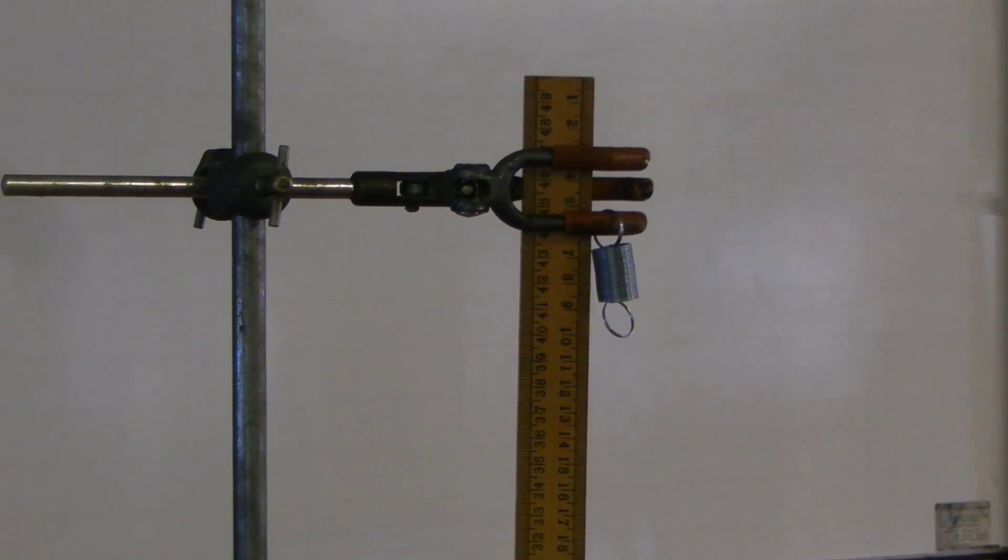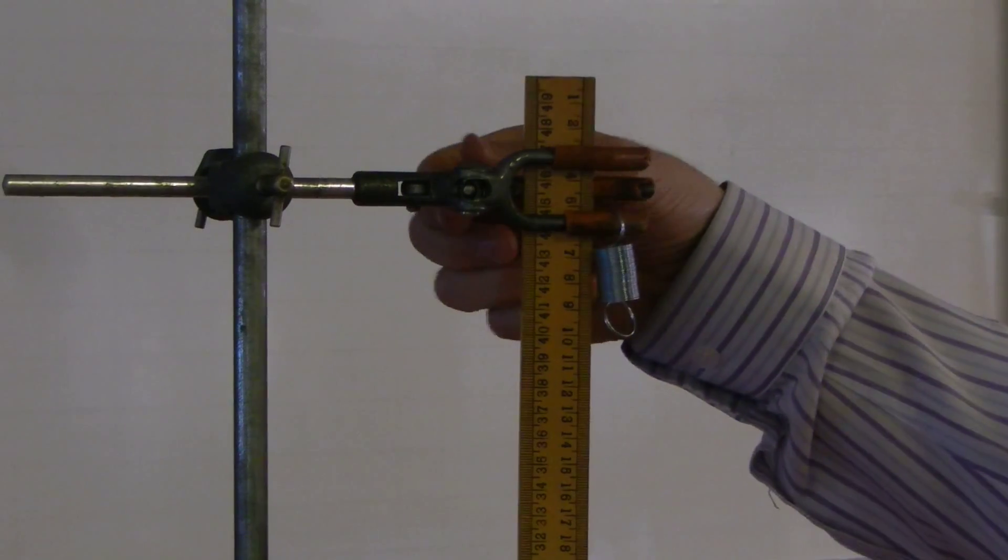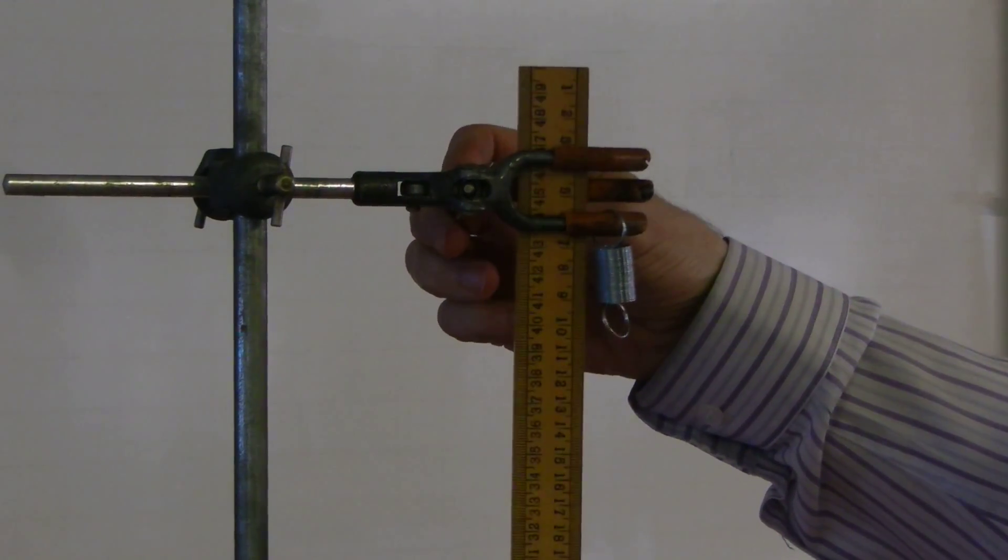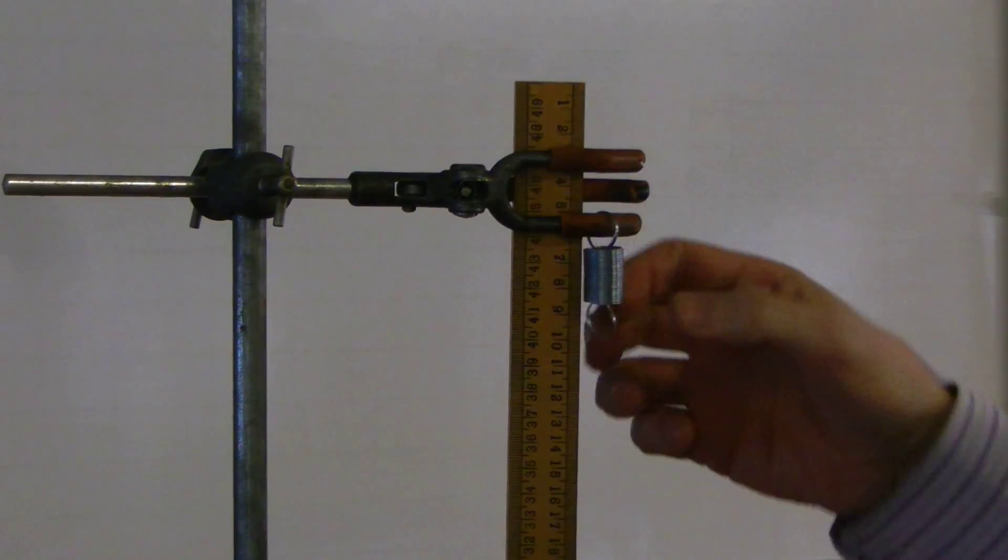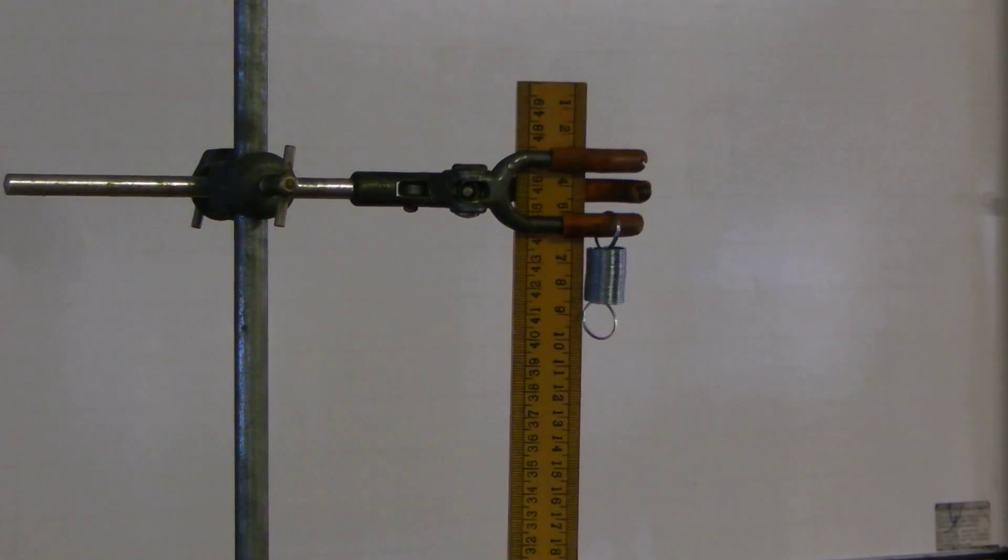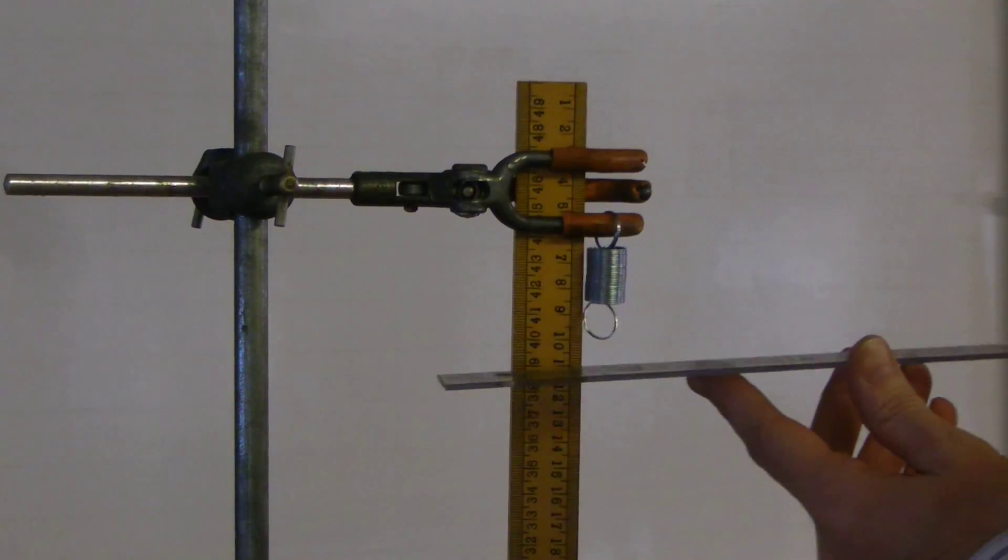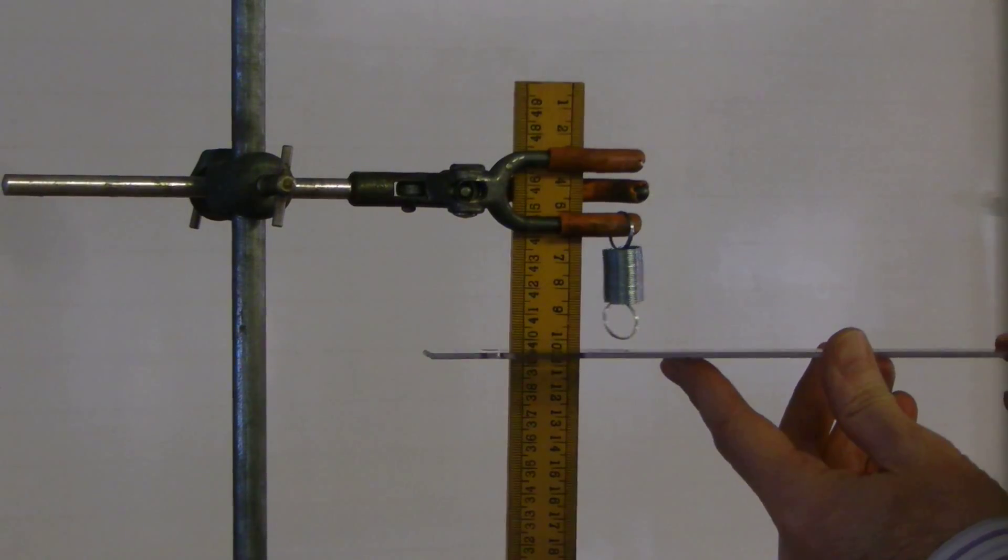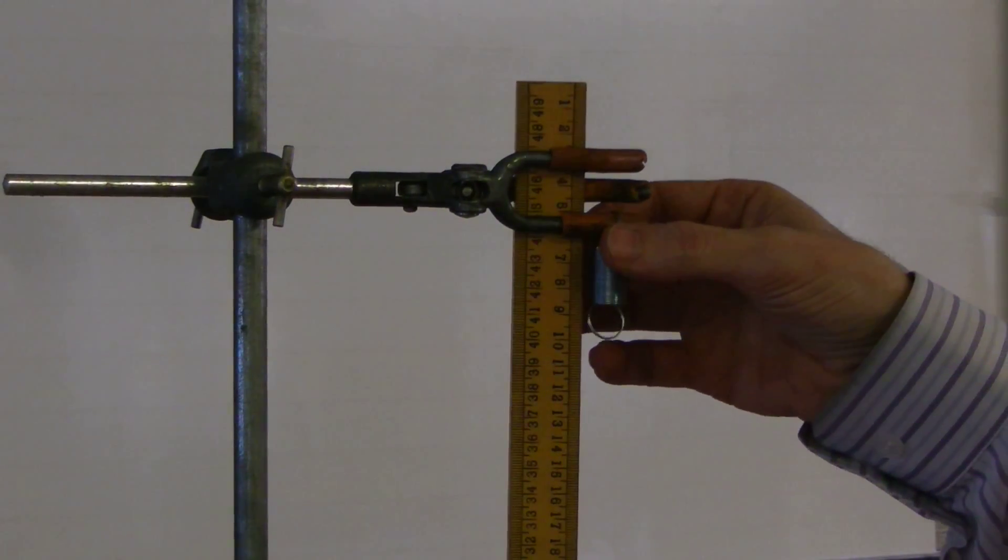When you set up this equipment, to make your life a little bit easier, you should adjust the position of the metre rule so that, what I have done is I've arranged it so that the bottom of my spring, as you can see, is in line with the 10 on my scale, on my half-metre rule.